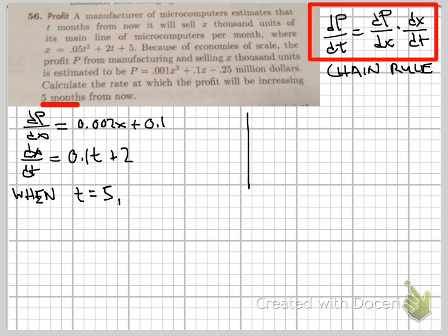So when t is equal to five, these dp/dx terms and dx/dt terms will take on specific values. dp/dx when t equals five will be 0.002 times five—we get 0.01—plus 0.1, we get a value of 0.11. And then our dx/dt at our specific time of five is going to be 0.1 times five plus two, that's 2.5.